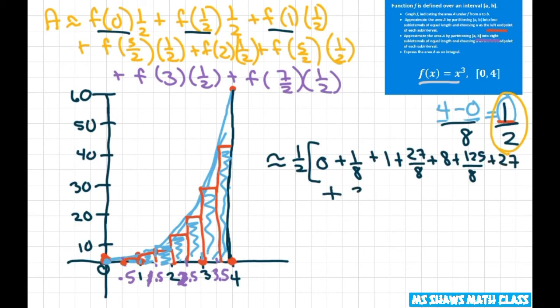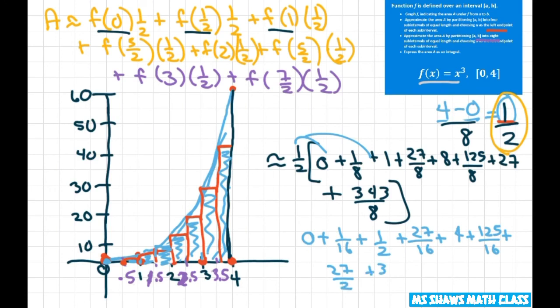Excuse me, I have a cold. So you want to get 1 half times 0 plus 1 eighth plus 1 plus 27 eighths plus 8 plus 125 eighths plus 27 plus 343 sixteenths and then when you add all that up you probably use a calculator or get your common denominator is 16 you're going to get the answer is 49.